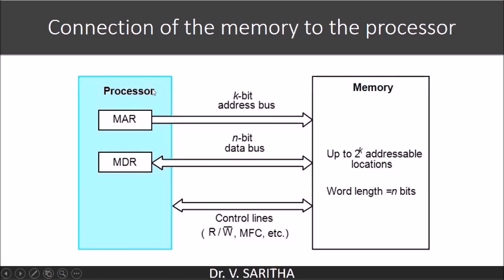Connection of the memory to the processor. The processor has two registers: MAR and MDR. For simplicity only two registers are shown here. The memory has up to 2 power k addressable locations and word length equal to n bits. When there are 2 power k addressable locations, the address bus size is k bits. When word length is n bits, the data bus size is n bits. The control lines give signals to the memory and the processor whether a read or write operation is to be performed. MFC is the memory function completed control signal.